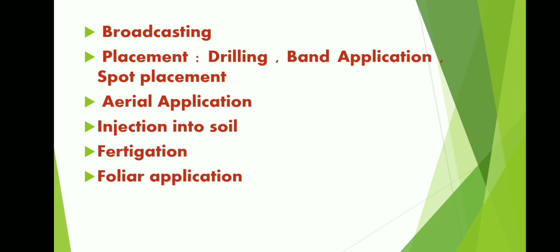The second method is placement. Placement is the application of fertilizers at a particular place where it is actually required. It is very important because we have to apply the correct dose of fertilizers only to the crop so that it can grow and yield better without any extra losses or residual effects to the soil or crop.